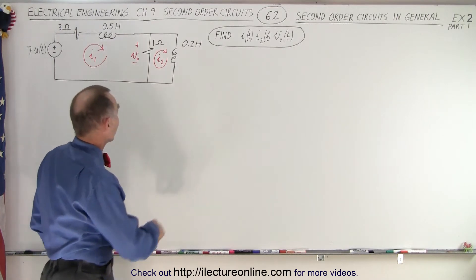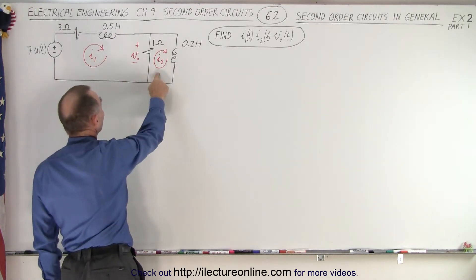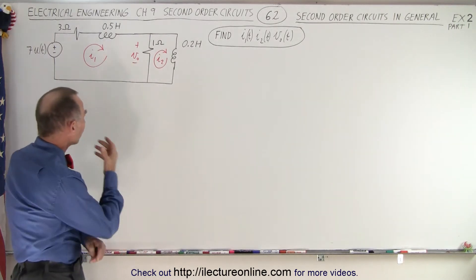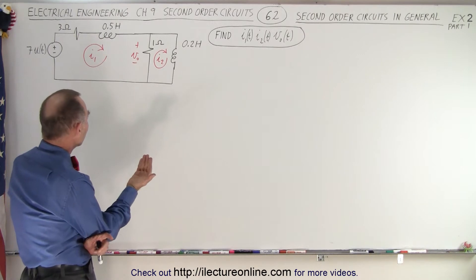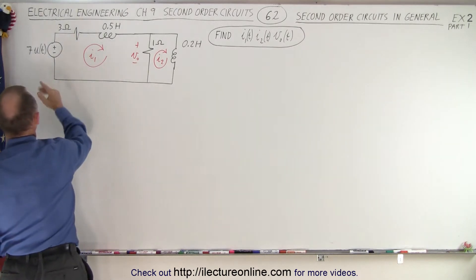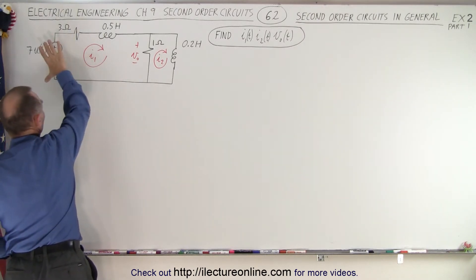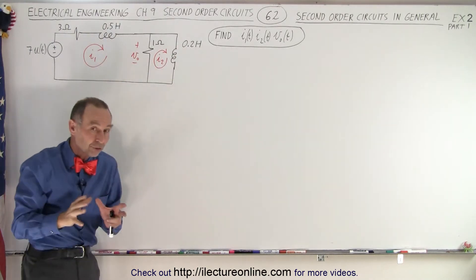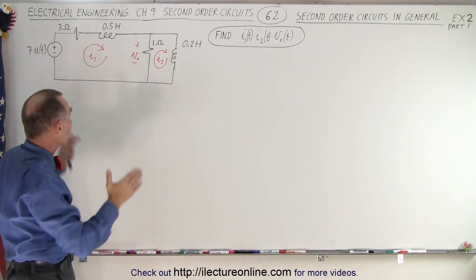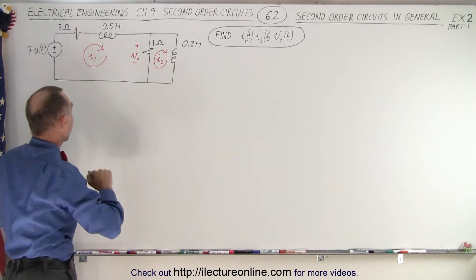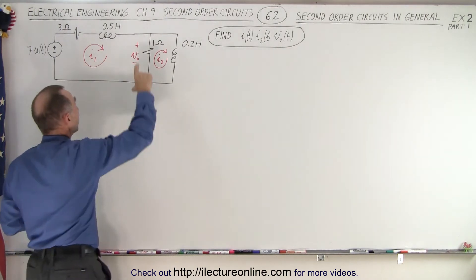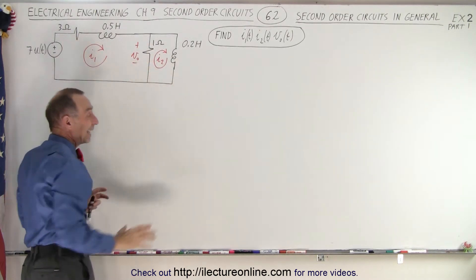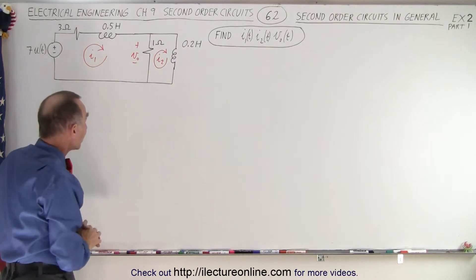What we're supposed to find is I1, I2, and the voltage across the resistor. First, let's see what our initial conditions are. When at time equals zero, we have 7 volts applied to the circuit, but the inductor prevents any current from flowing at time equals zero. So essentially there's zero current at that moment, and therefore zero voltage across both resistors.